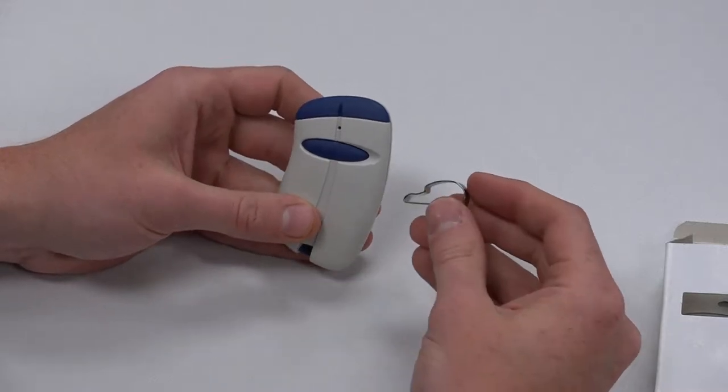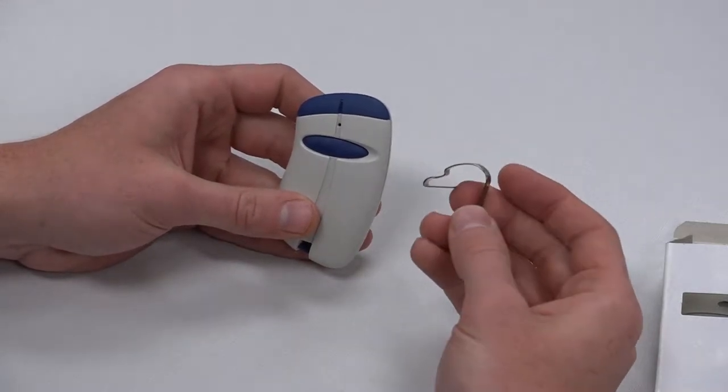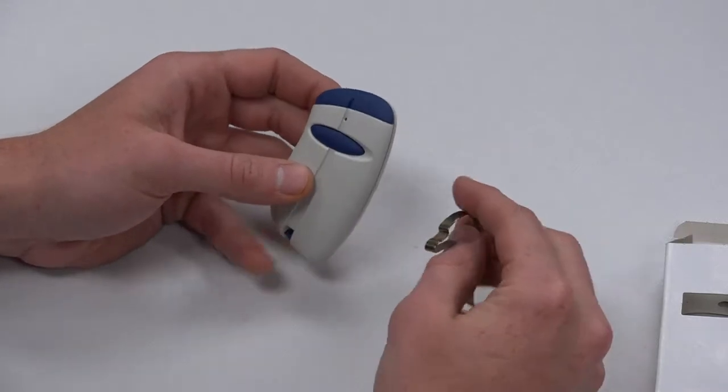So this is going to be a quick video on how to install the vehicle visor clip to the Stinger Remote line.